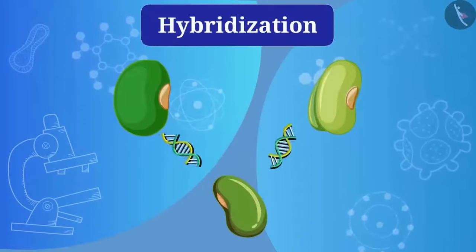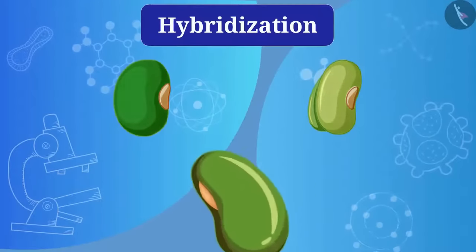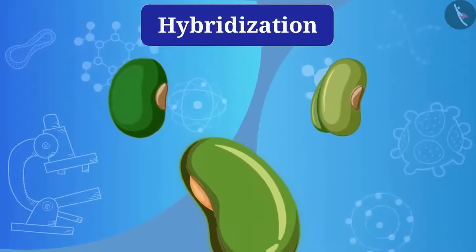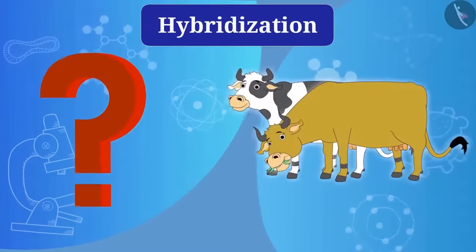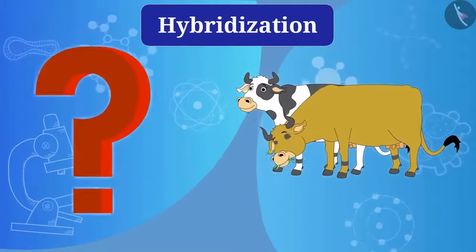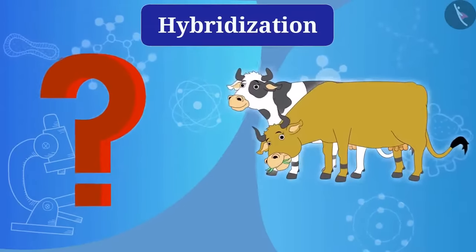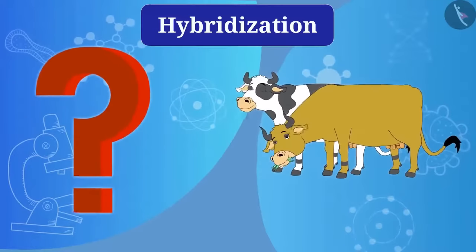Friends, we have known that through hybridization, crops of desired properties can be obtained. Can this hybridization be possible in animals as well? Can a species with desired properties be obtained in animals also by hybridization?